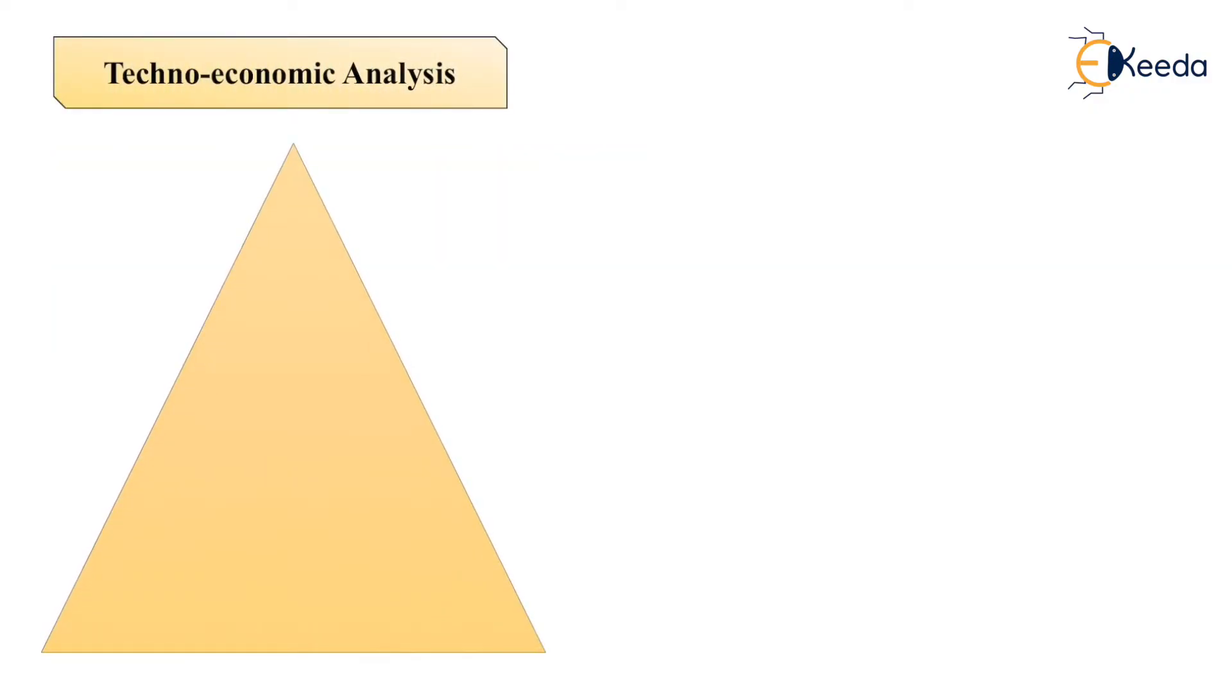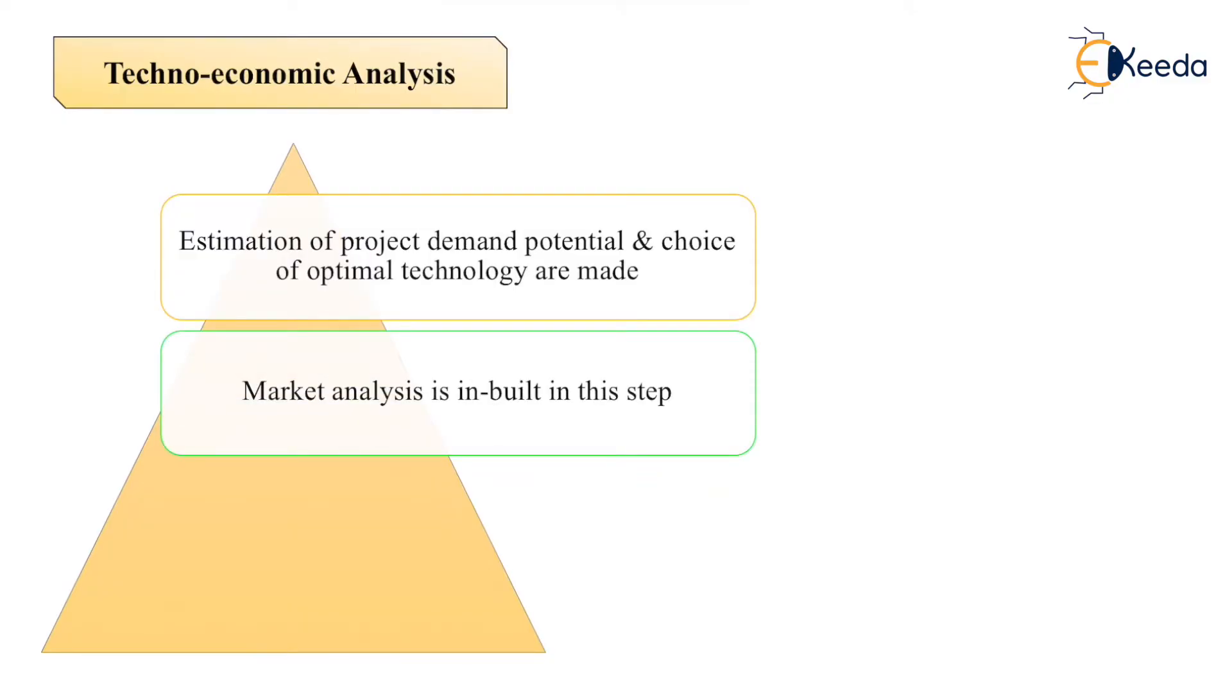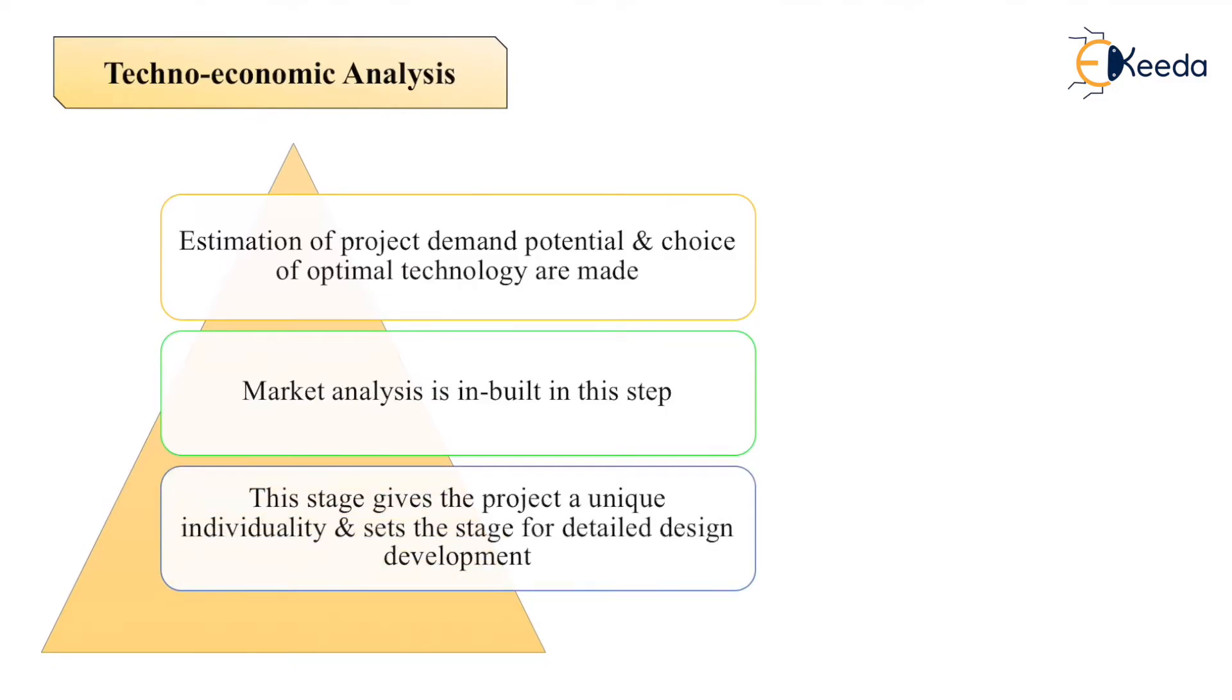Then we go for the second step which is techno-economic analysis. In this, estimation of project demand potential and choice of optimal technology are made. The technology we are going to select for this project is done in the second phase. Market analysis is inbuilt in this step, and this stage gives the project a unique individuality and sets the direction.